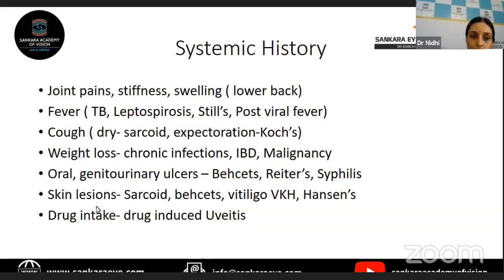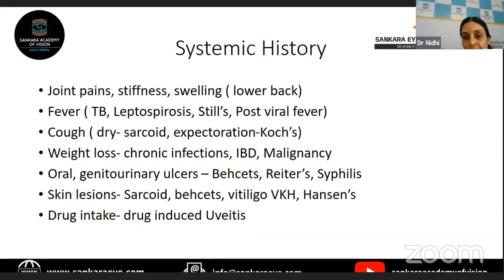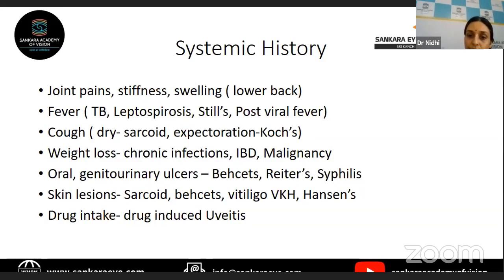Asking for history of skin lesions is important. In sarcoid, you might have skin granulomas — mild, deforming, painful granulomas — that will give you an idea that the patient probably has sarcoidosis. The patient might have vasculitic rashes. Sometimes you might see vitiligo, which might be there in cases of VKH, especially in pigmented races where the sunset glow fundus is not so evident, and the patient keeps coming back with granulomatous inflammation. These integumentary signs will help you in identifying the presence of VKH.